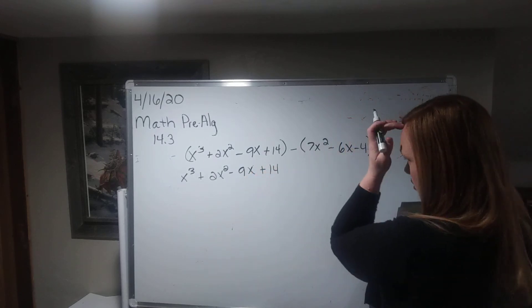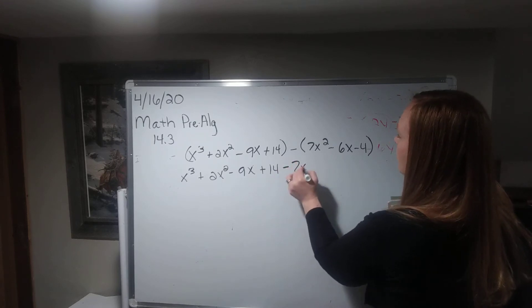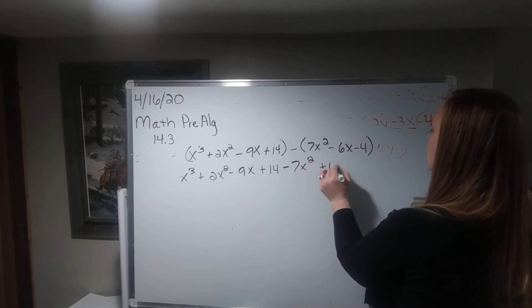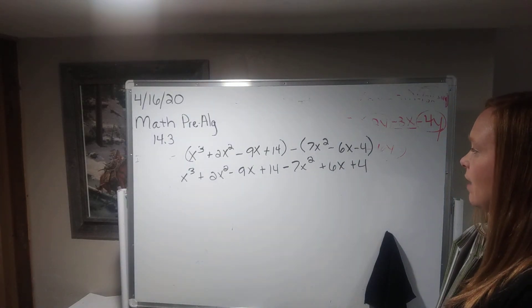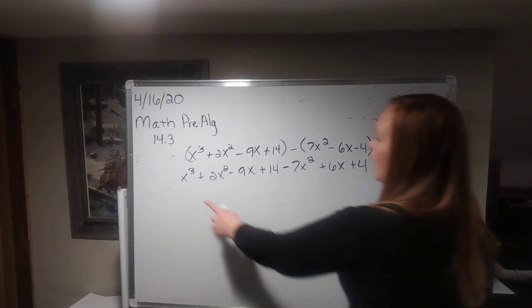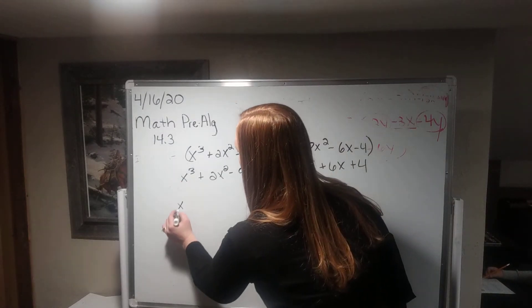Okay, and then I need to do the opposite or distribute the sign. Minus 7x squared plus 6x plus 4. Okay, now it's about combining like terms. I only see 1x cubed. So I'm going to go ahead and bring it down.